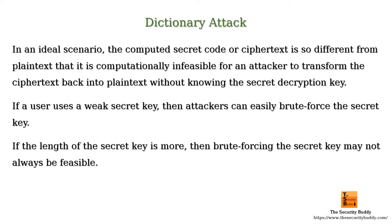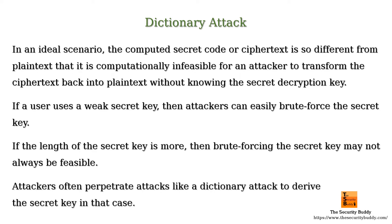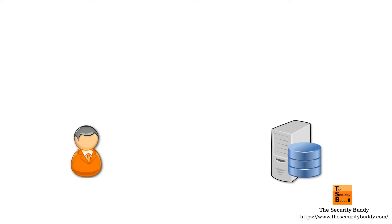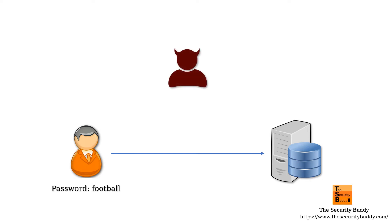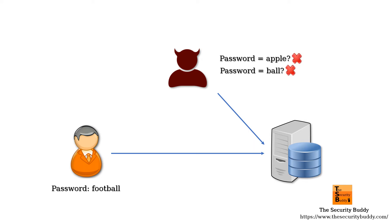Attackers often perpetrate attacks like a dictionary attack in that case to derive the secret key. Let's say a user has kept a dictionary word as a secret key. So in that case, the attacker does not need to try out all possible combinations of characters. The attackers can try all words in a dictionary one by one and deduce the secret key. We call such an attack a dictionary attack.